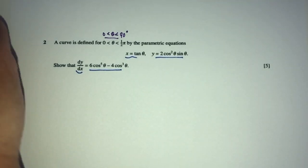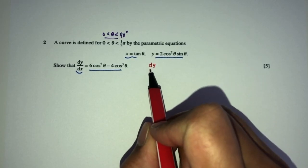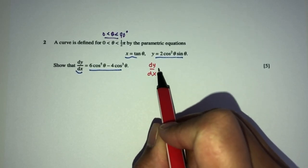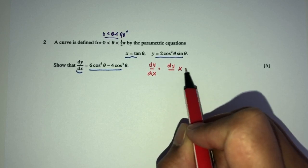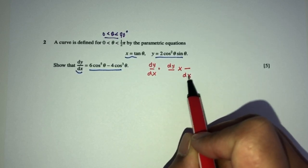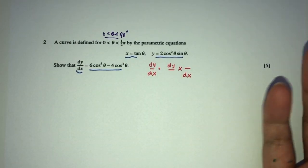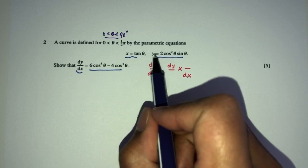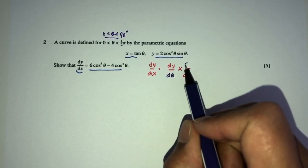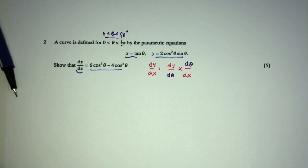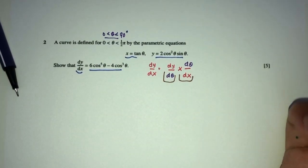Let's first define what dy by dx is in this question. Obviously, dy by dx, as we have seen before by chain rule, it is dy on top times something, but dx at the bottom. They have to be connected by something — you can see x is in terms of theta and y is in terms of theta. So here we have d theta and d theta. Thus, you have to first find dy by d theta and then dx by d theta to find dy by dx.